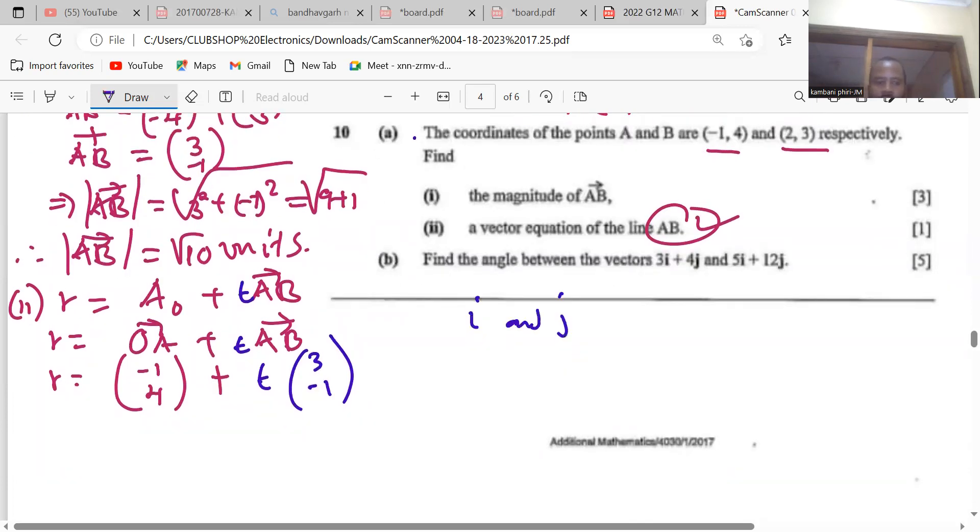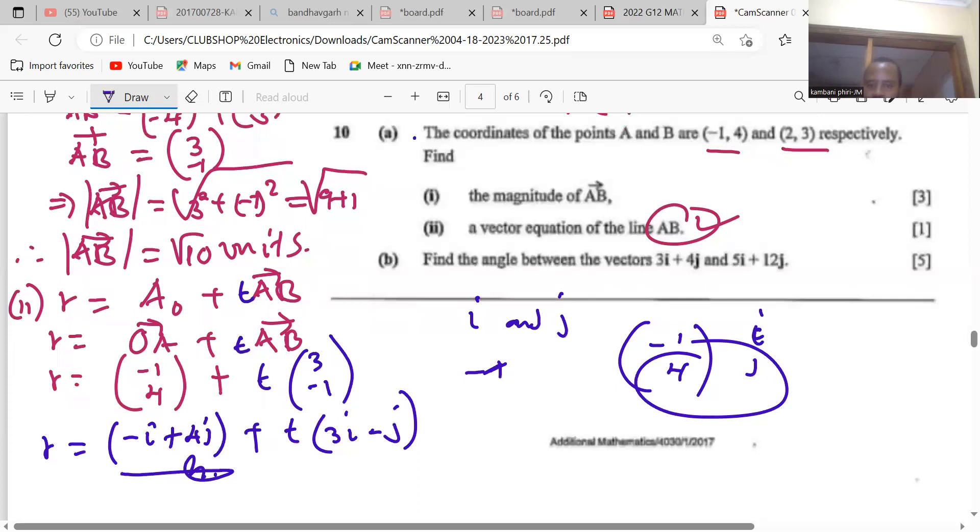This should be defined in terms of i and j, so meaning that this would be equal to, when we have (-1, 4), this is i and this is j. So this is -1 times i to get -i plus 4 times j you have 4j, you can put in brackets. Plus you can have your t which is a parameter, so 3i minus j, and this is our equation.